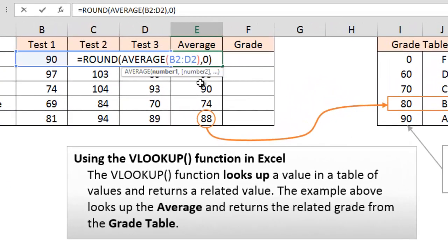For starters, the average used the average function to average the three test scores and then rounded that off to zero decimal places so we got a whole number for the average.